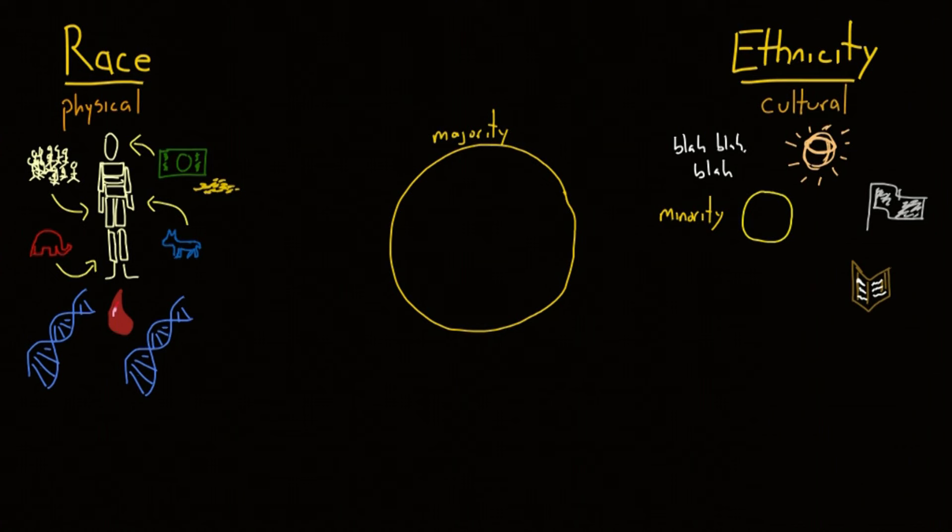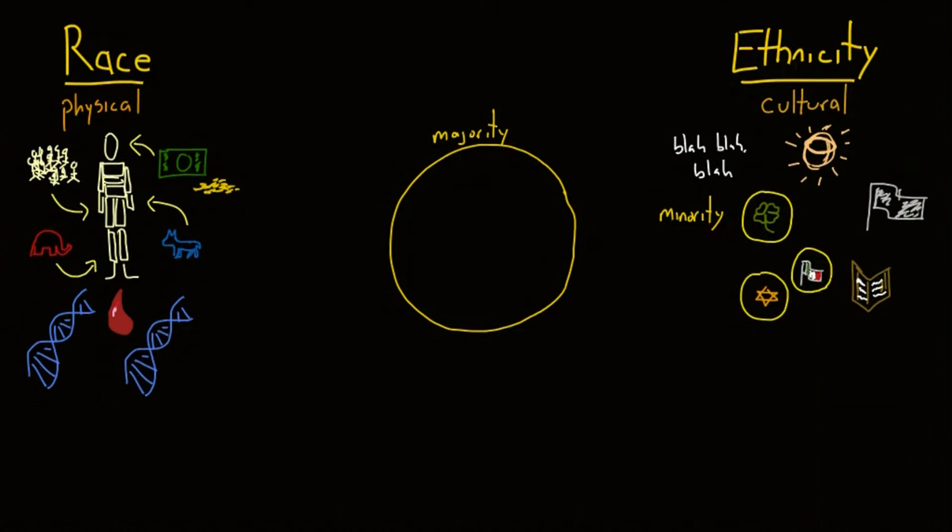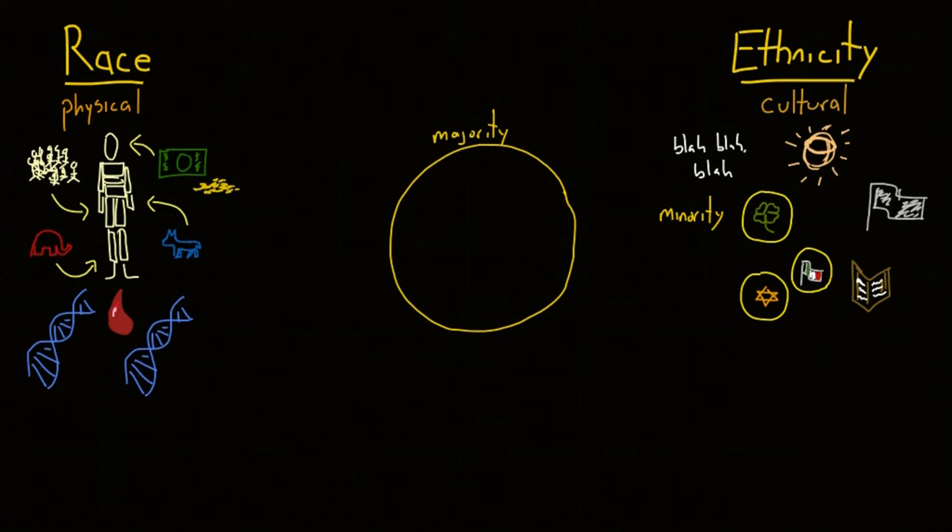In the 1900s, native-born Americans did not consider Irish, Italian, or Jewish immigrants to be white, which actually resulted in discrimination against them and limited where they could live.